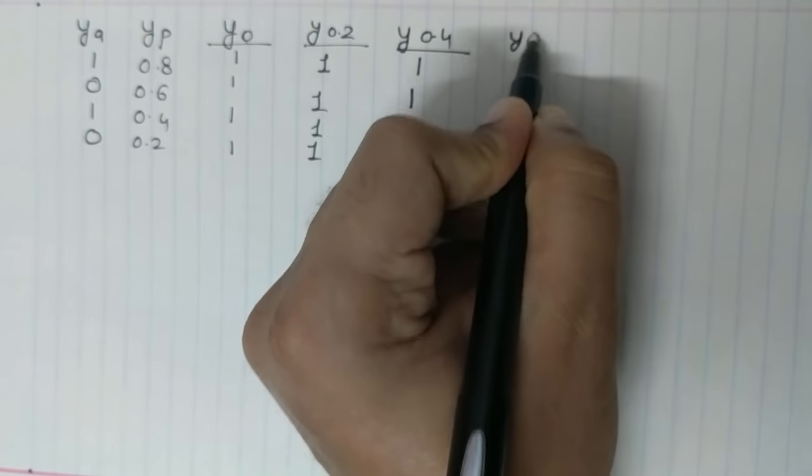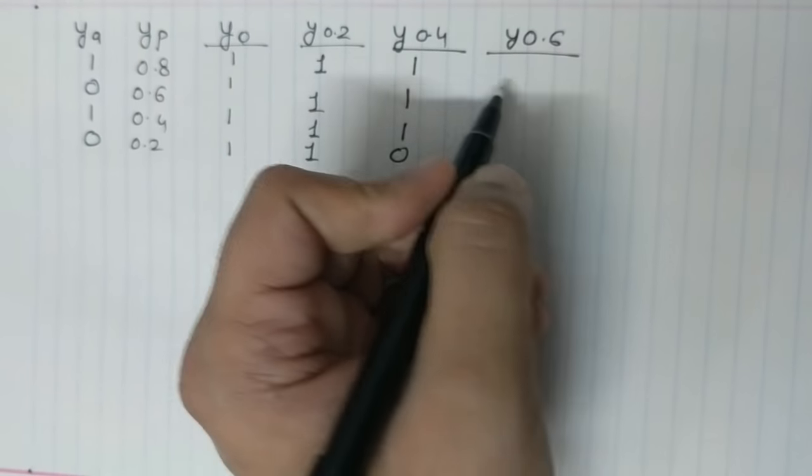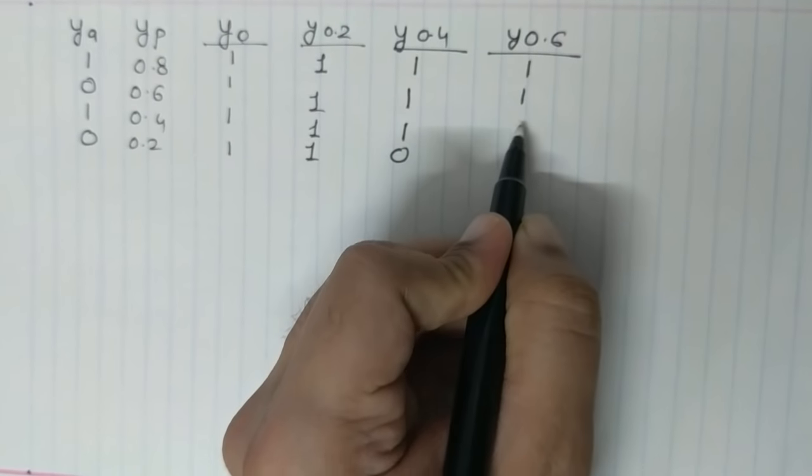Similarly you will do something similar for 0.6. So for 0.6 you will have 1, 1, 0, 0.